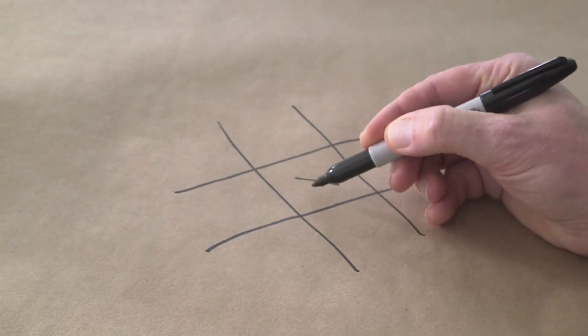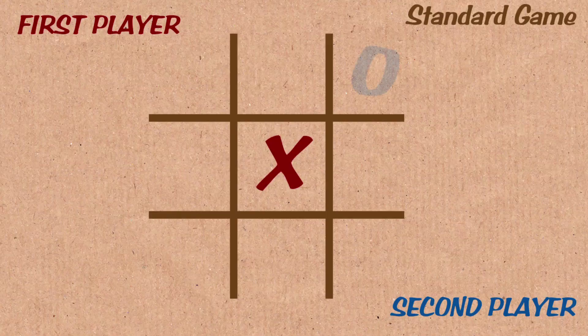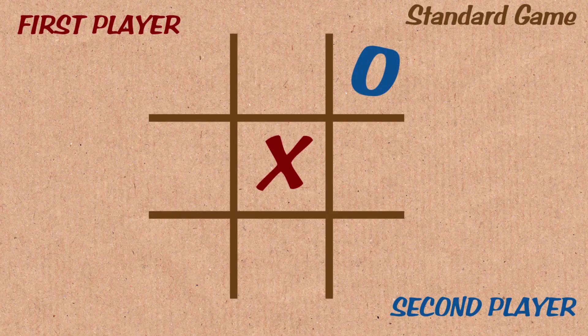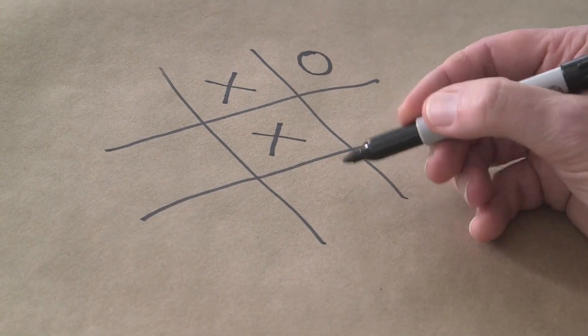Let's say X goes first. A good move is typically to take the center here like that, and then O might go over here, for example. X might follow up here, threatening to get three in a row, and then O will typically play here.